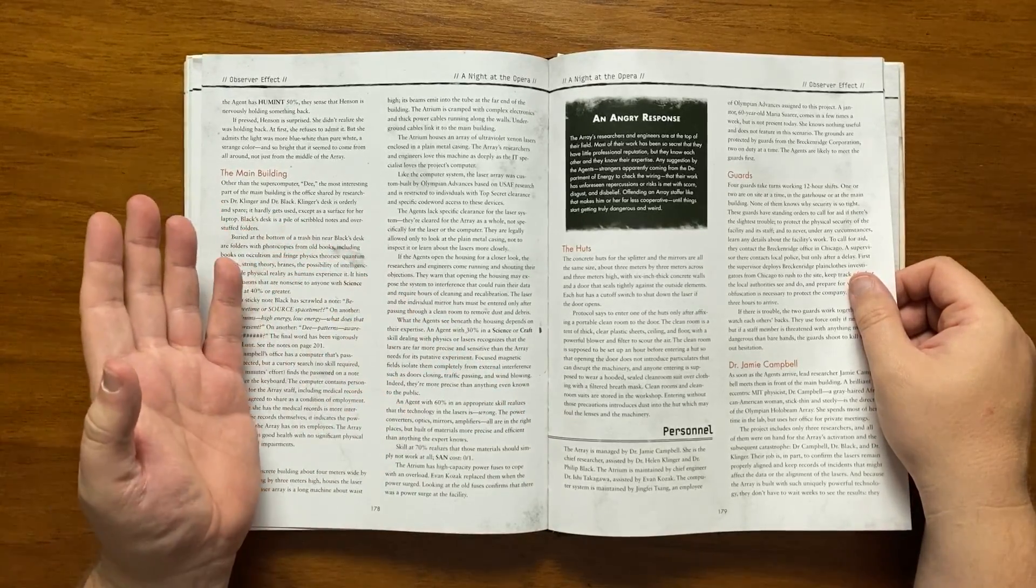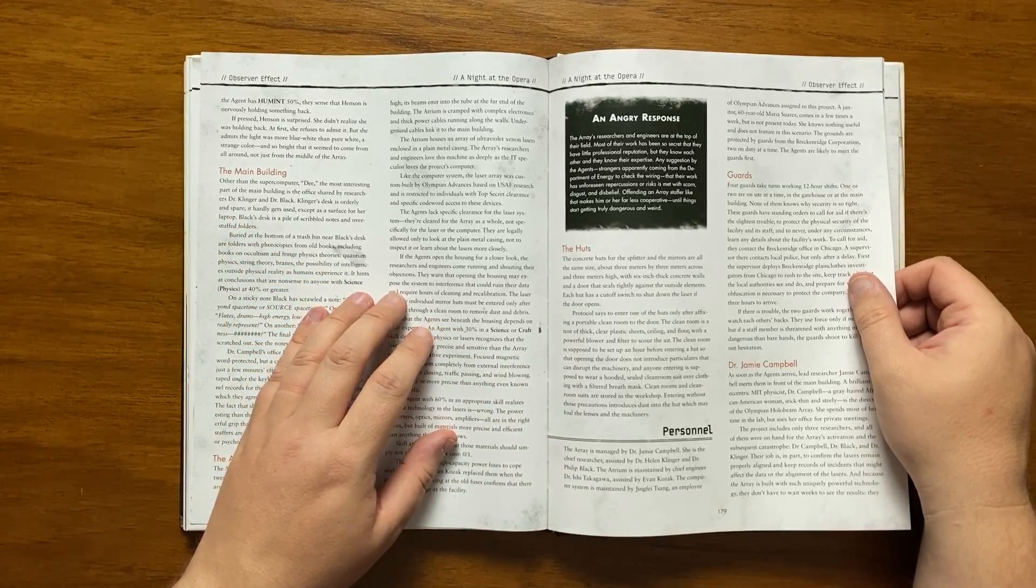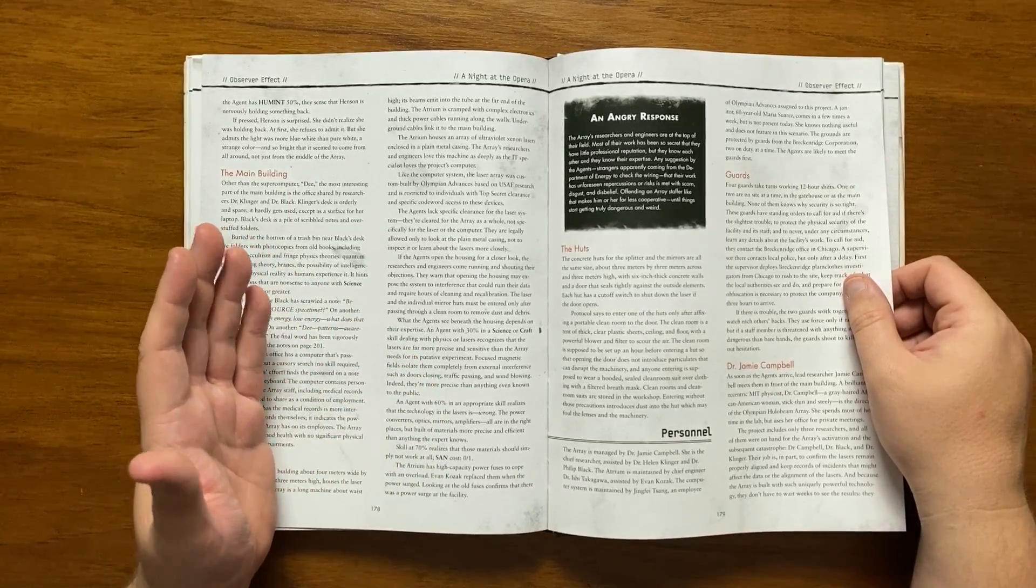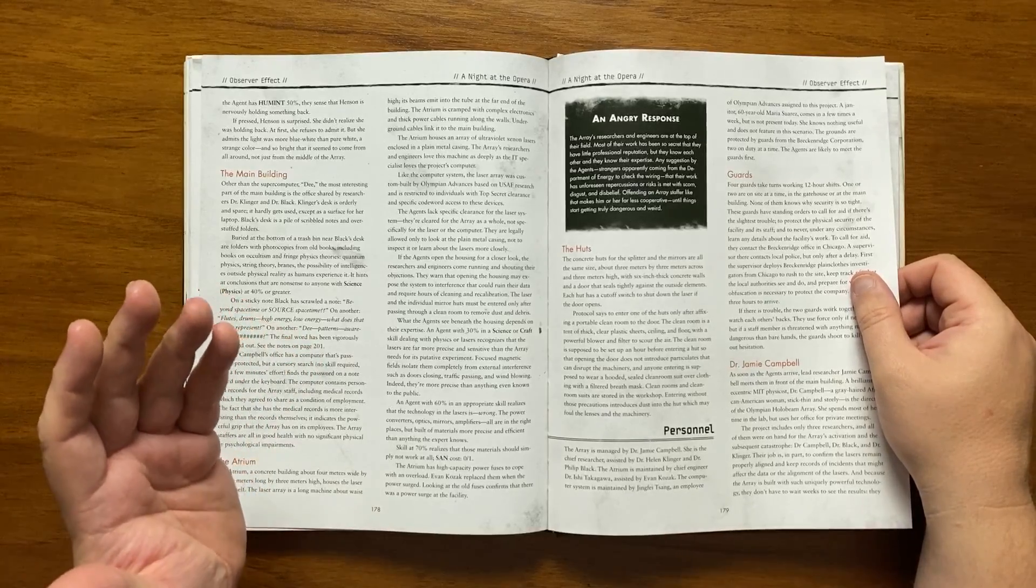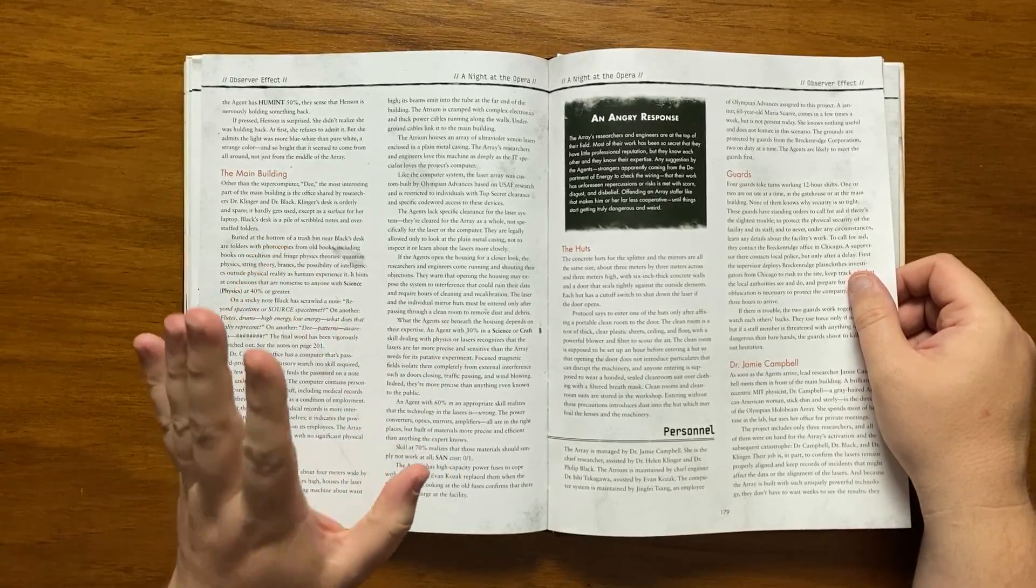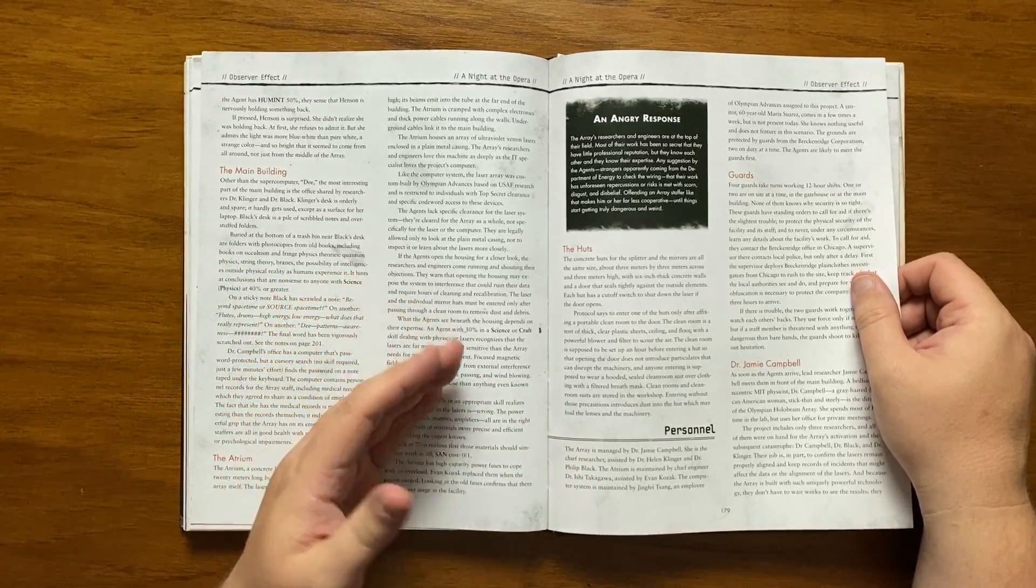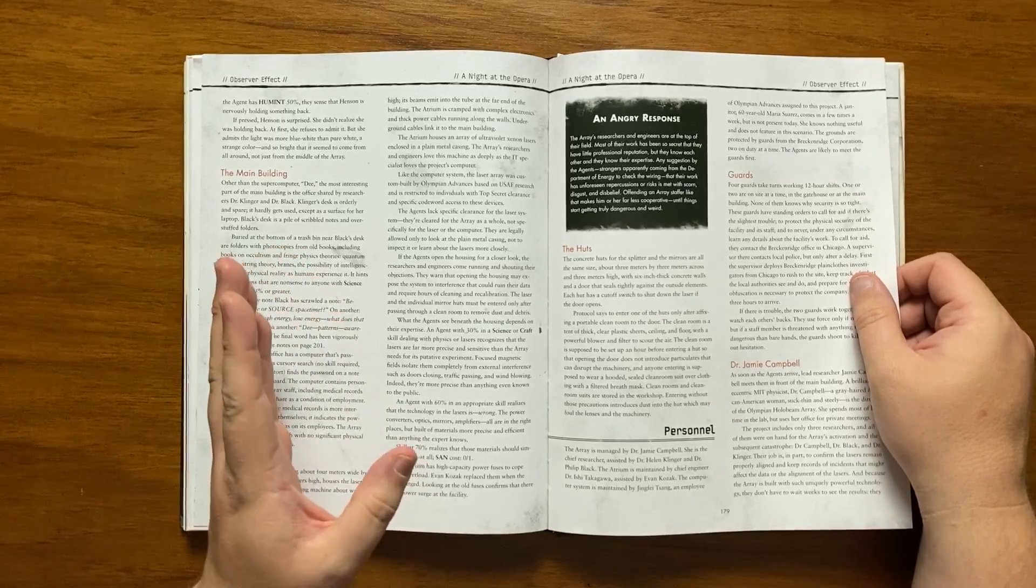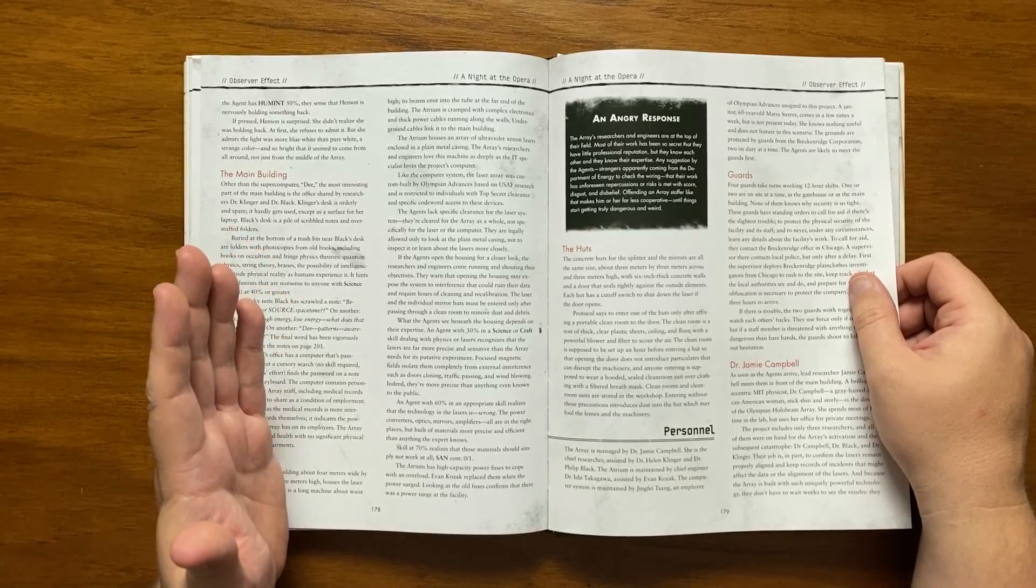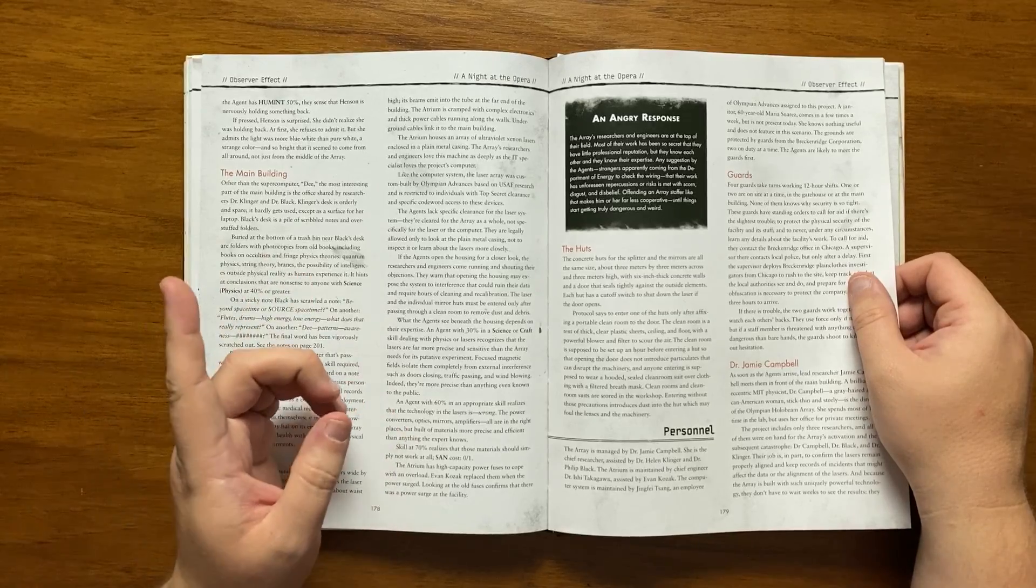The atrium houses the laser Array itself, a long machine about waist high with beams emitting into a tube at the far end of the building. These ultraviolet xenon lasers enclosed in metal casing. This is all custom built by Olympian advances using USAF research and is code word accessed. The agents are not cleared to look at the lasers of the computer only the casing. If they open the housing up the engineers and researchers will file in shouting objections that interference could ruin their data. If the agents get a good look at the lasers they will with the right roles see that they are far more sensitive than the Array needs with those that are highly skilled in the right fields understanding that this is all wrong and coming to the conclusion that this should not work which could affect their son.